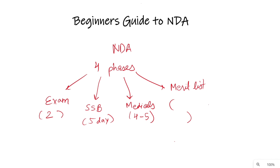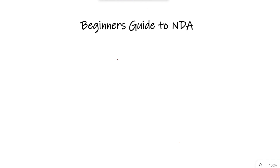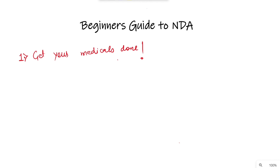तो ये four phases होंगे आपके NDA के लिए। अब आपको NDA के बारे में basic information पता लग गई है। सबसे पहली जो चीज आपको करनी है वो है — get your medicals done। बहुत ही ज़्यादा important है। अगर आप NDA की तैयारी कर रहे हो, तो अपना medical शुरुवात में करा लीजिए।